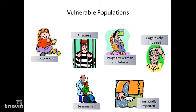Investigators and members of research ethics committees should be aware of populations that might be prone to vulnerability. This includes children, prisoners, pregnant women and fetuses, the cognitively impaired or the mentally ill, those who are financially impaired, and also the terminally ill.